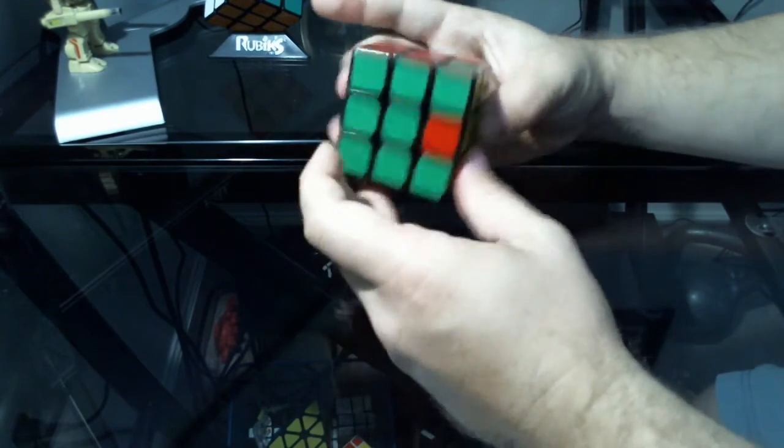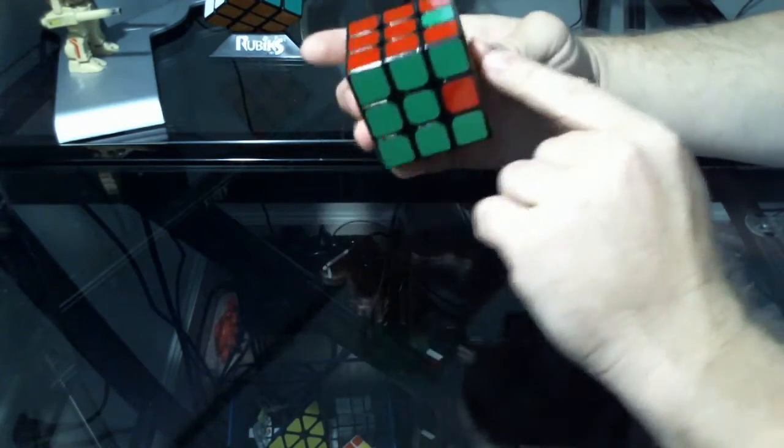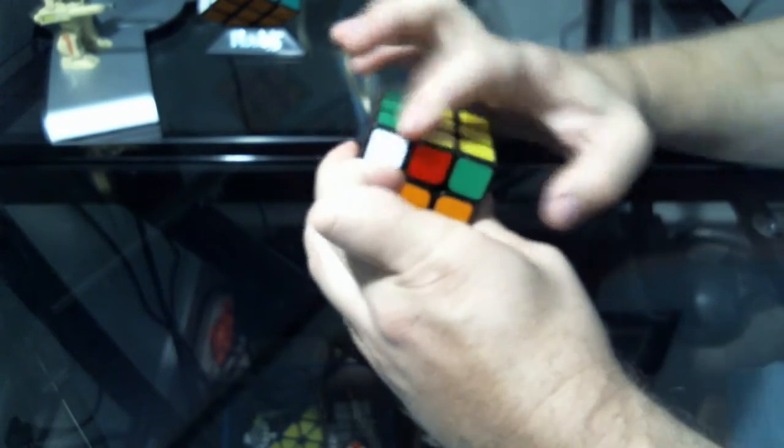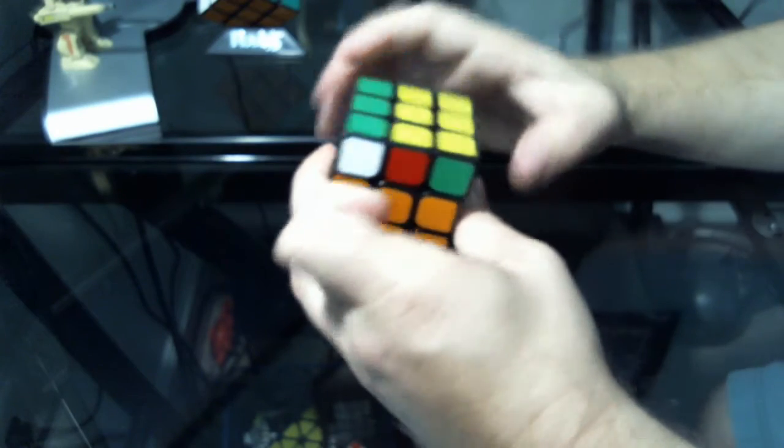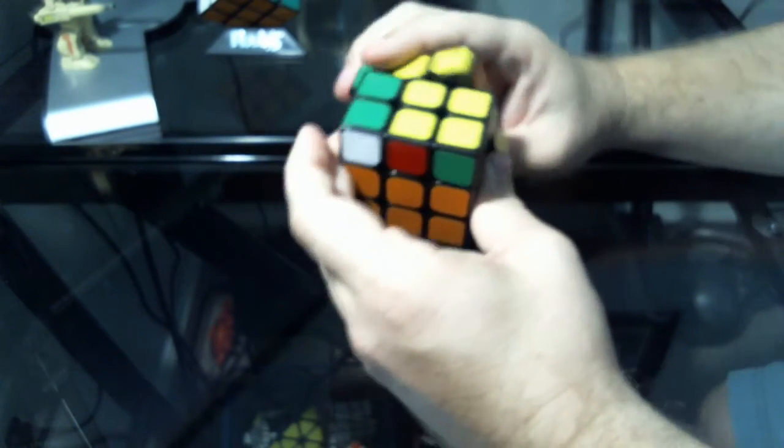So yet again, this algorithm is a two cycle, so we're in a position to run it. So what we do is we lift up and put this slice here, these two pieces there, lift up.